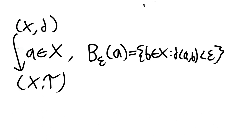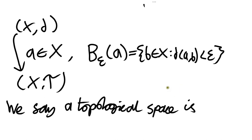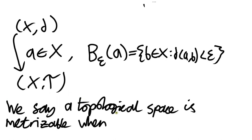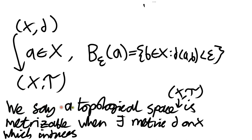If we take our topological basis to be the set of all open balls around all points, that induces a particular topology on our set — the open sets are the unions of open balls. So our metric space induces a topological space. In general, we can take a topological space and ask whether it is induced by some metric. This gives us the definition of metrizability.